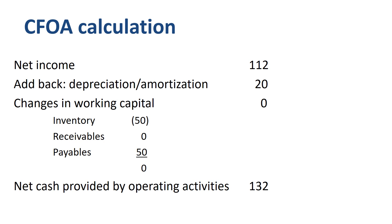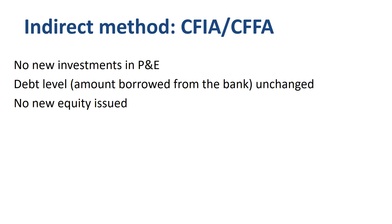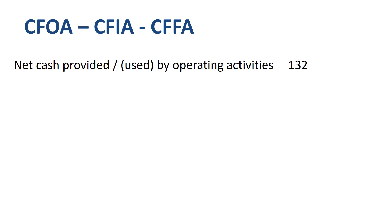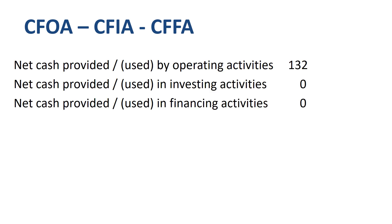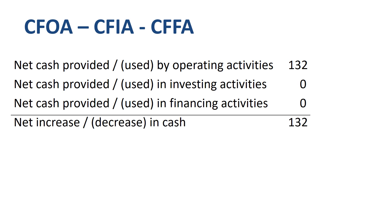To complete this example and build the full cash flow statement, let's look at cash from investing activities and cash from financing activities. In this example, to keep things simple, nothing is happening in either of those lines. In real life, for a mature and successful company, there would probably be a capex cash outflow in CFIA and a dividend cash outflow in CFFA. If you add up the three categories — cash from operating activities, cash from investing activities, and cash from financing activities — you get the net increase or decrease in cash.